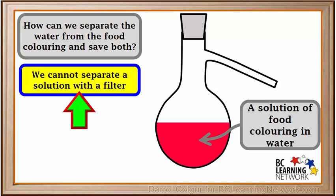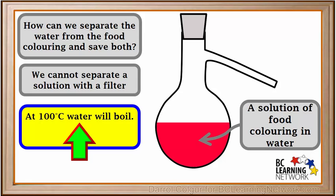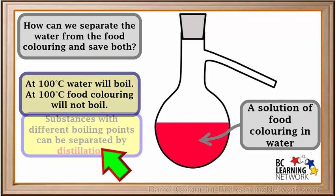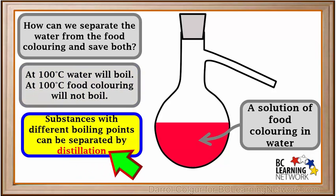Because this is a solution, it cannot be separated with a filter. However, it is known that at a temperature of 100 degrees Celsius, water will boil, but at 100 degrees Celsius, food coloring will not boil. Substances with different boiling points can be separated by a process called distillation.